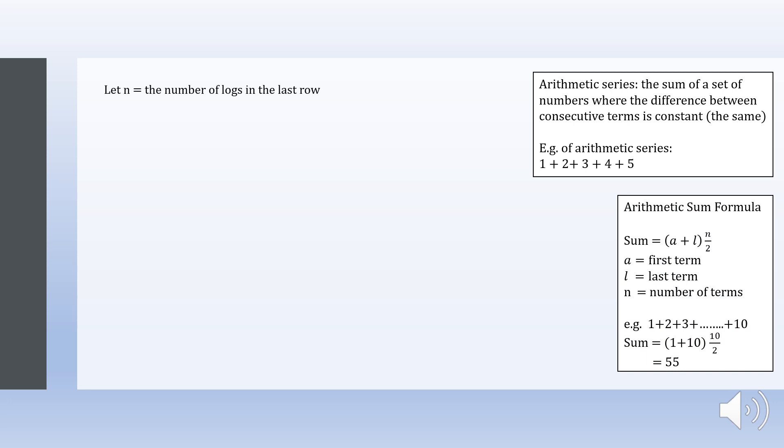For this question, let n equal the number of logs in the last row. 2 + 3 + all the way to + n equals to 3002.